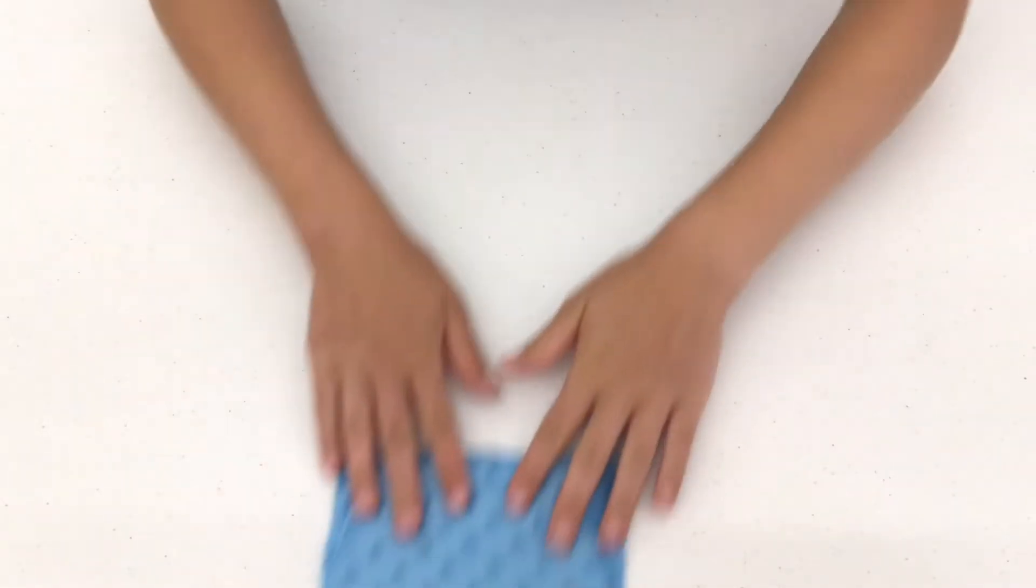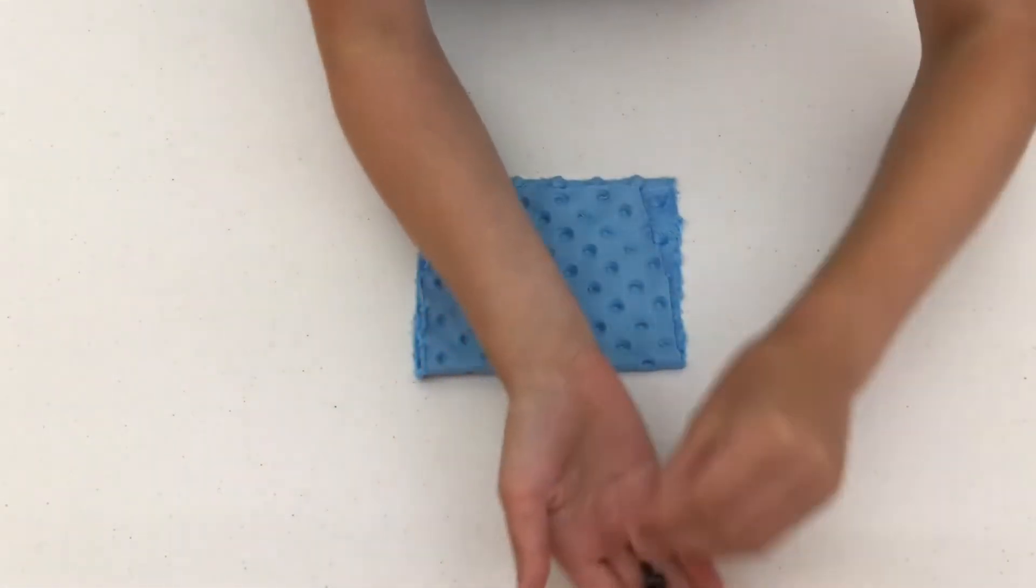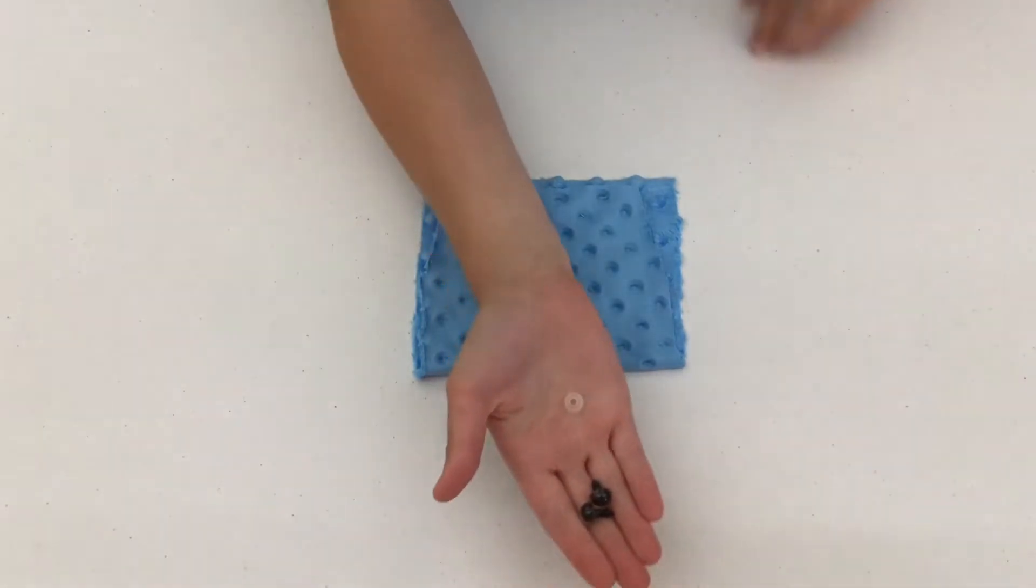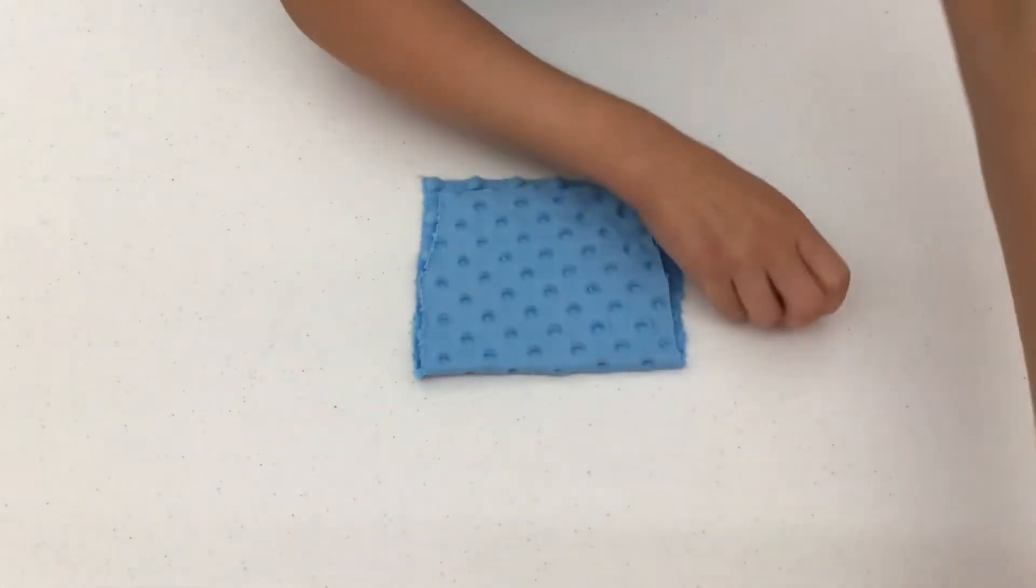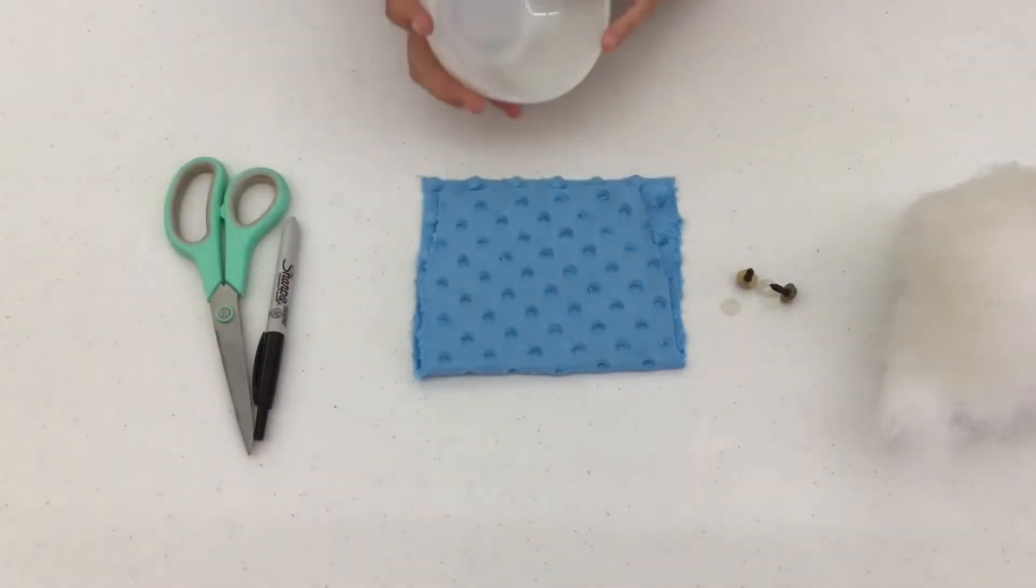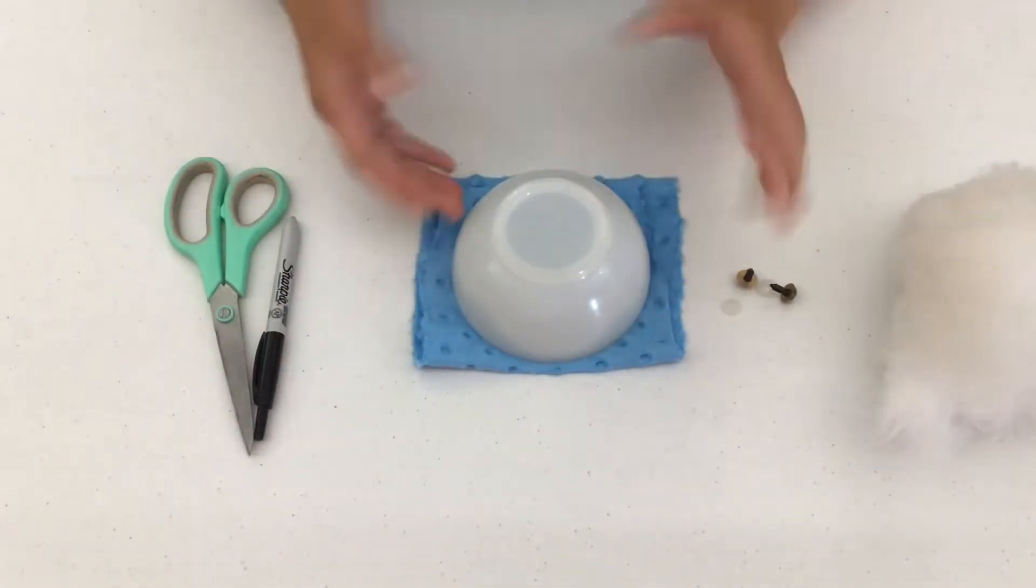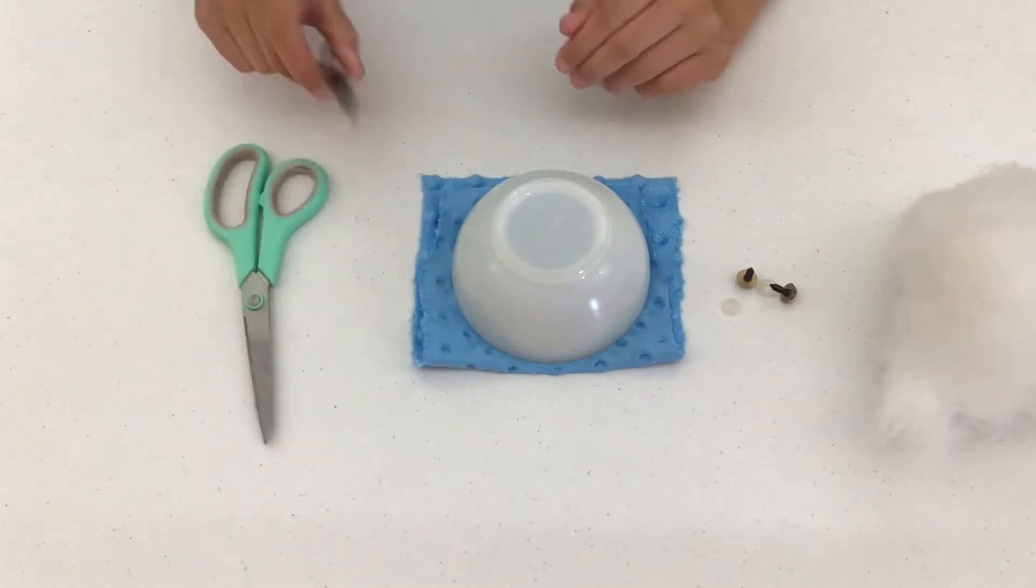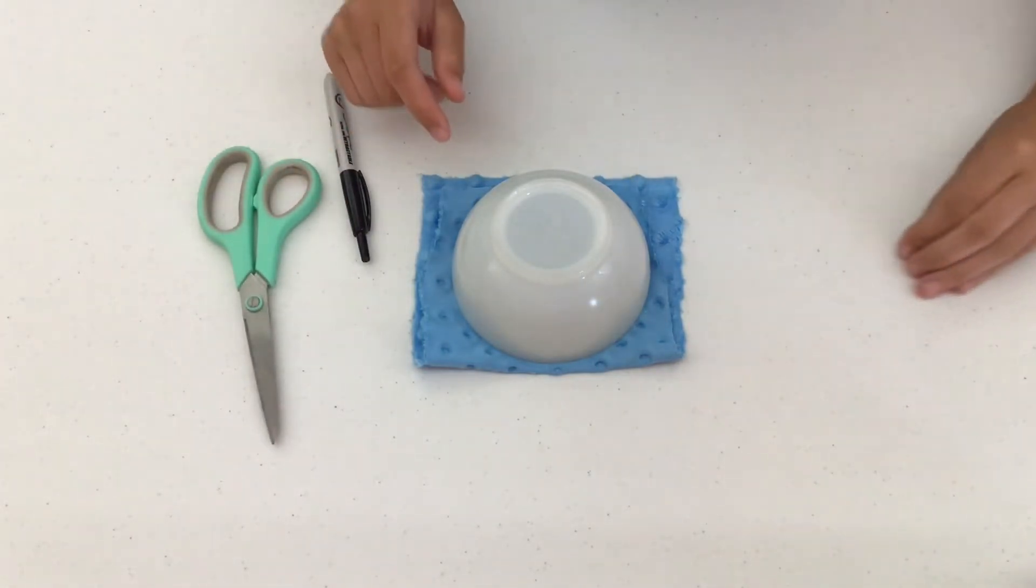For today's Worry Pet craft, you're going to need the scrap of fabric that was in your bag, the little eyepieces—there should be two eyes and two clear or brown discs—your stuffing, you're going to need a bowl or cup that's about the size of your fabric folded in half, a pen, scissors, and hot glue.